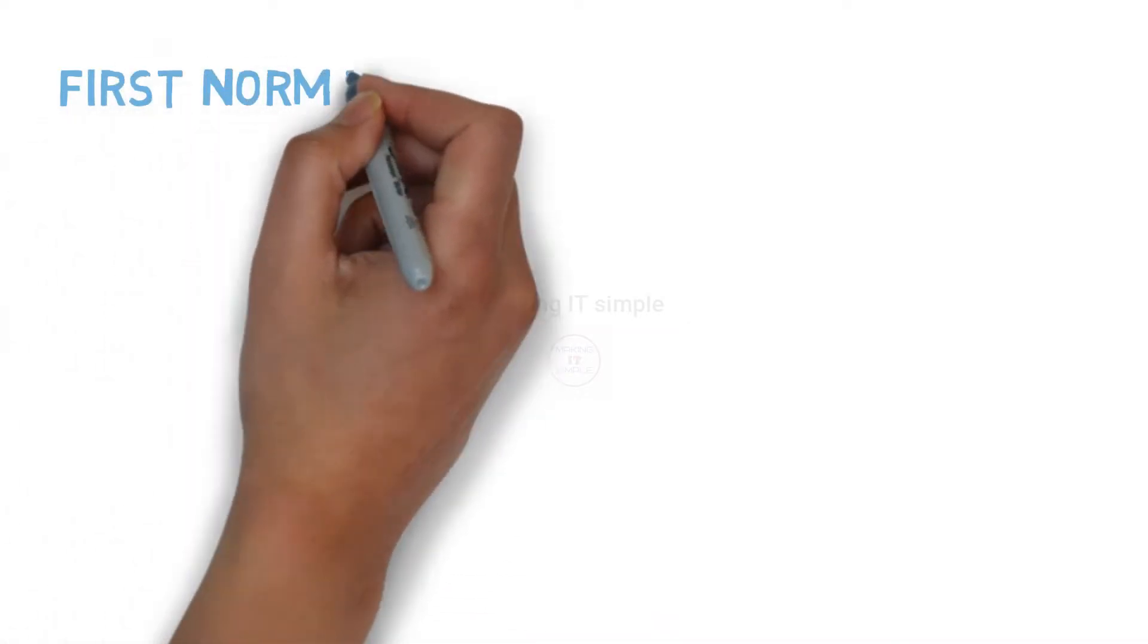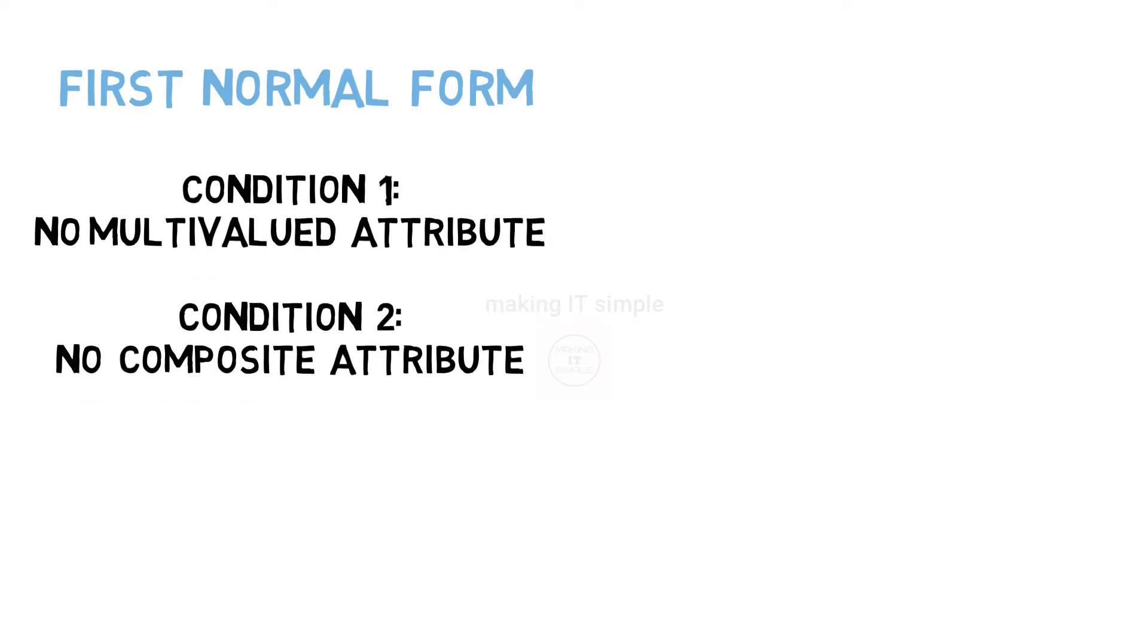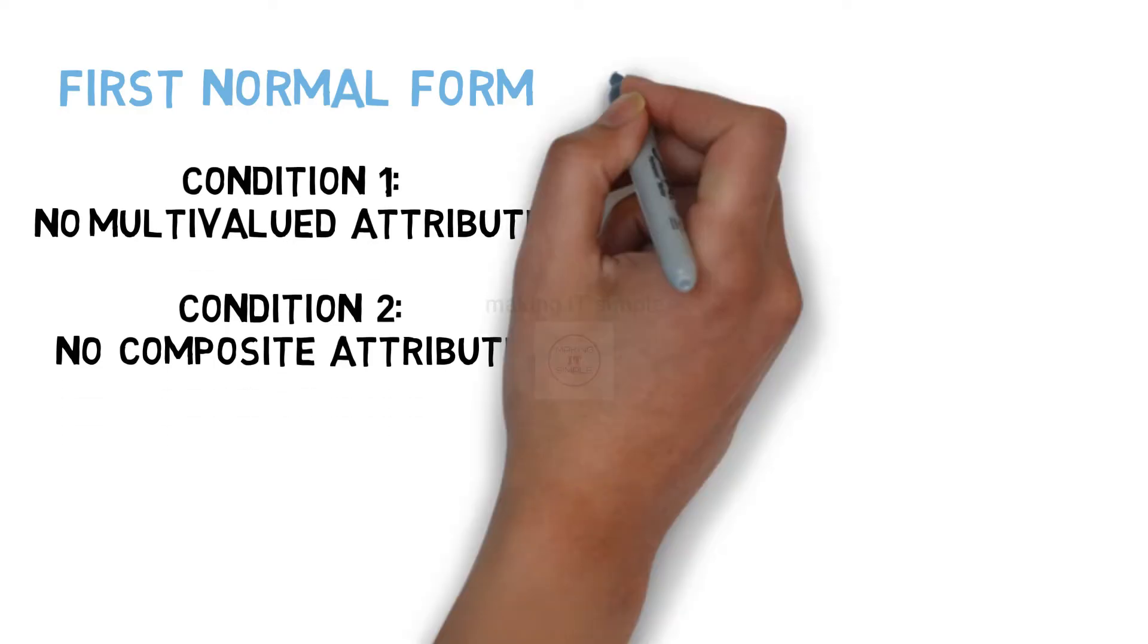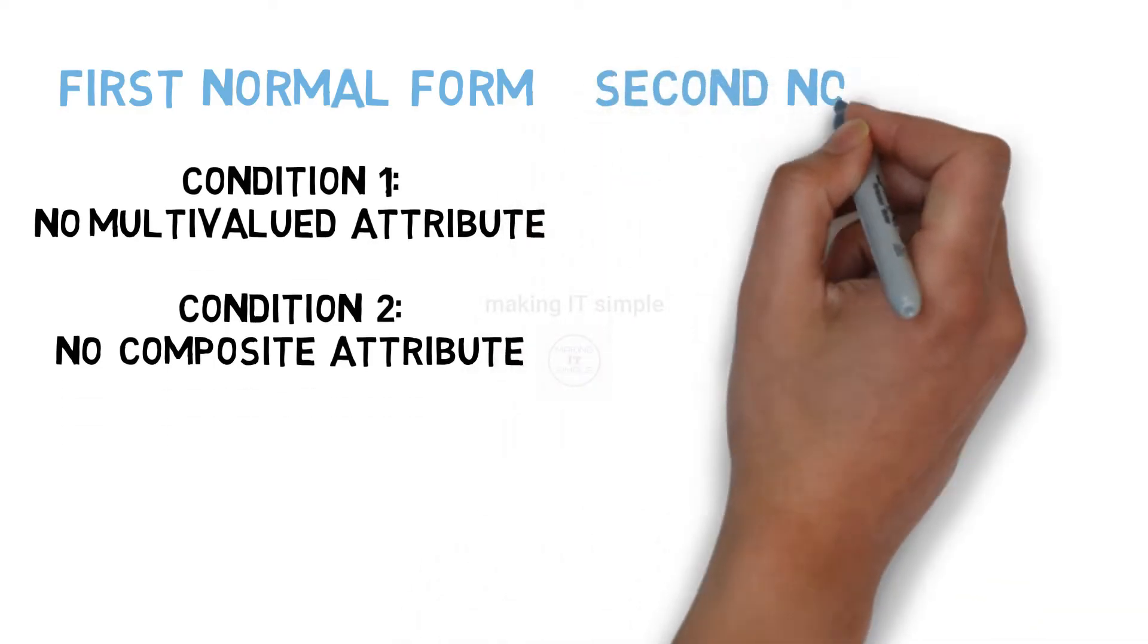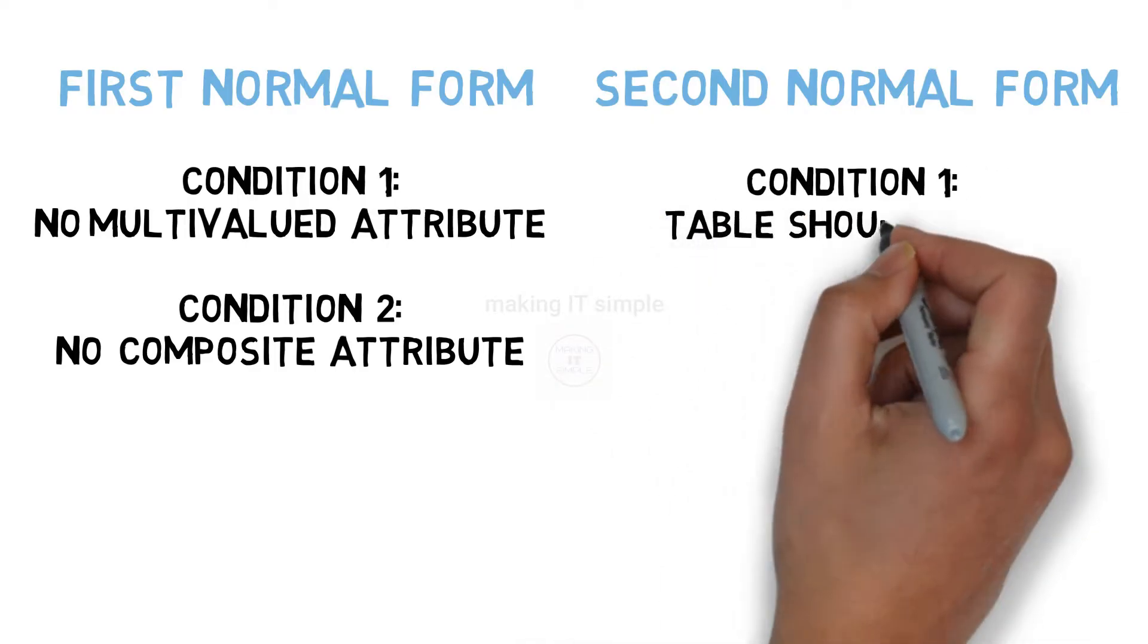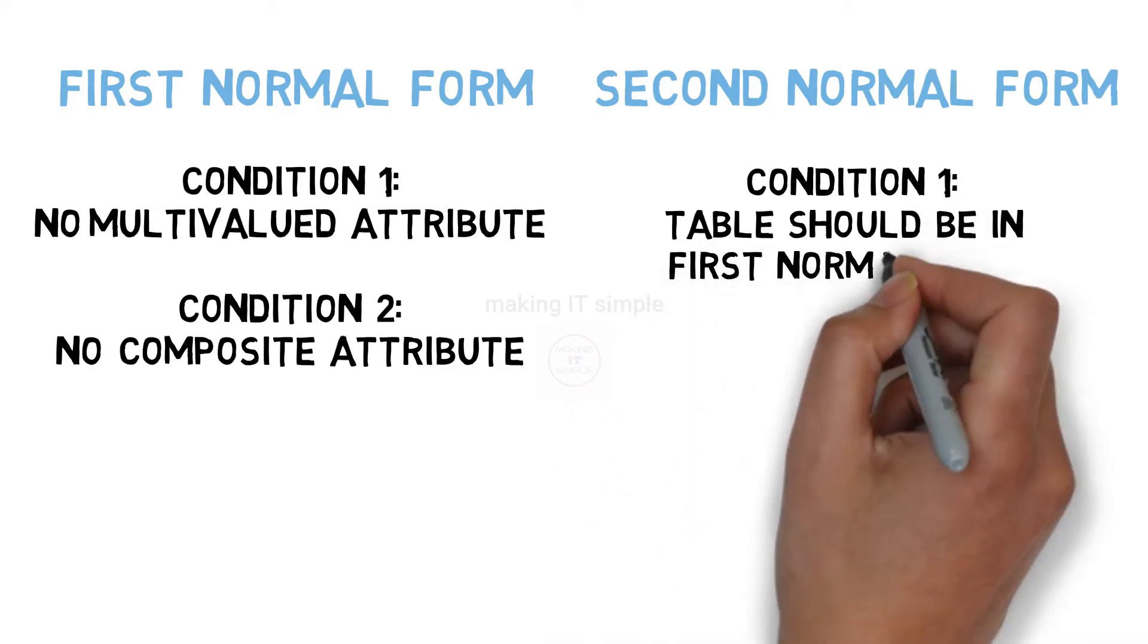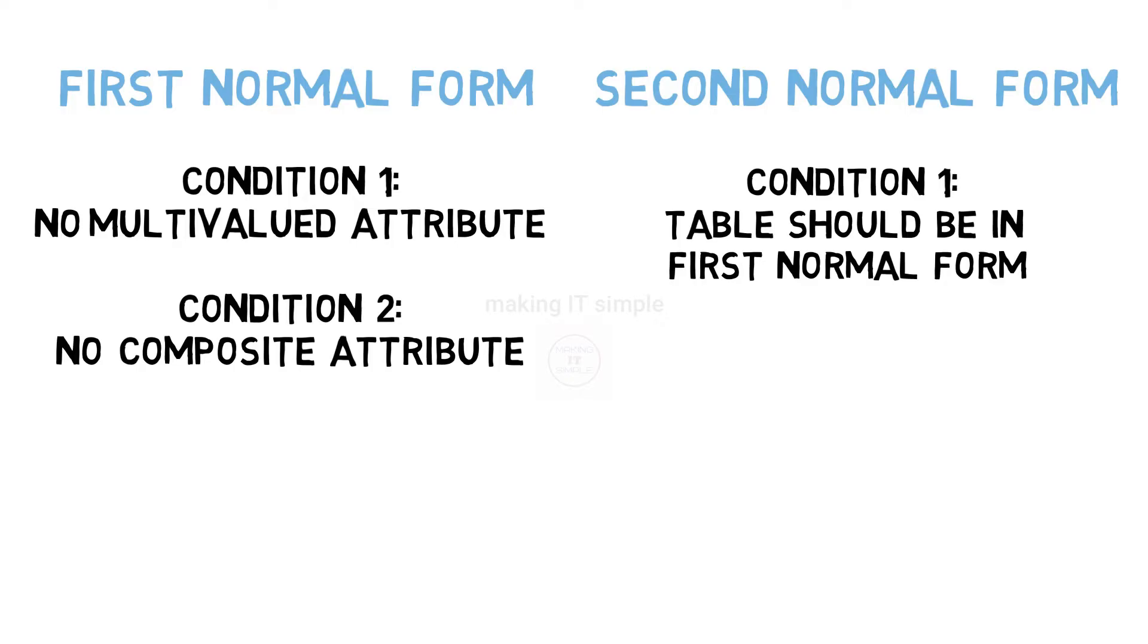As we studied previously, for a table to be in the first normal form it has to satisfy some conditions. Similar to that, for a table to be in a second normal form it has to satisfy some conditions as well. What are those? Let us see. First condition is that the table must be in first normal form. As it cannot be in second normal form if it is not in first normal form. Seems pretty logical.